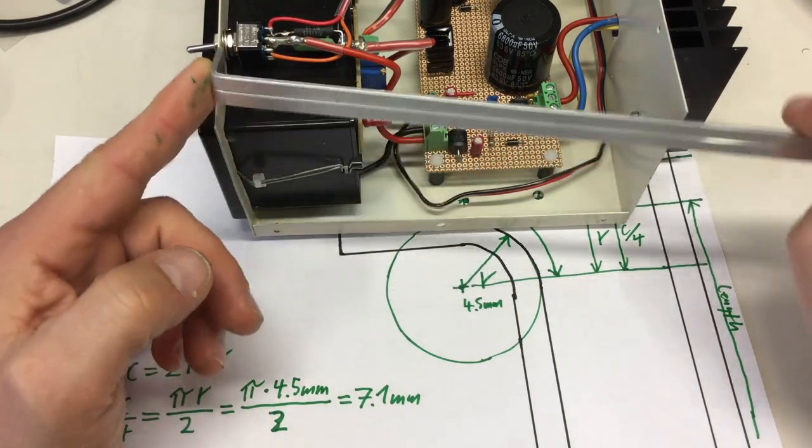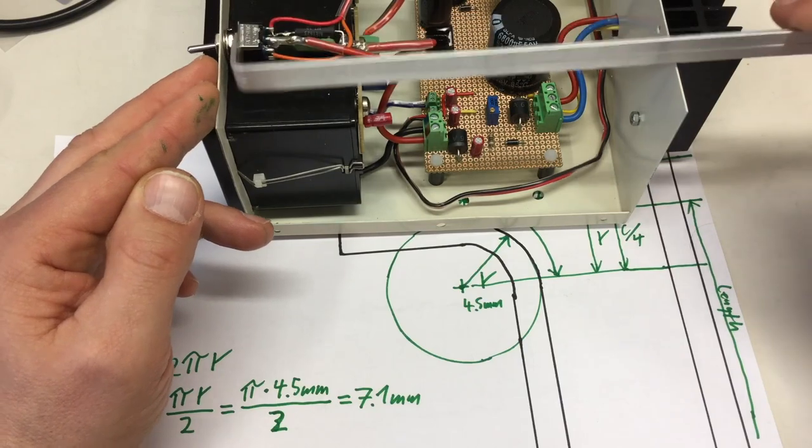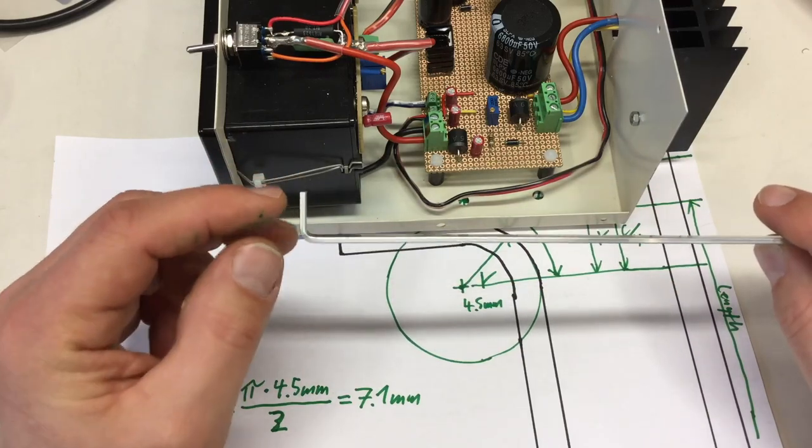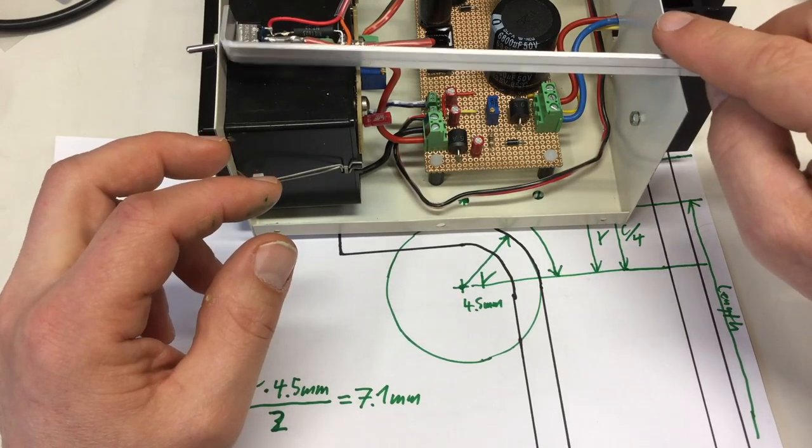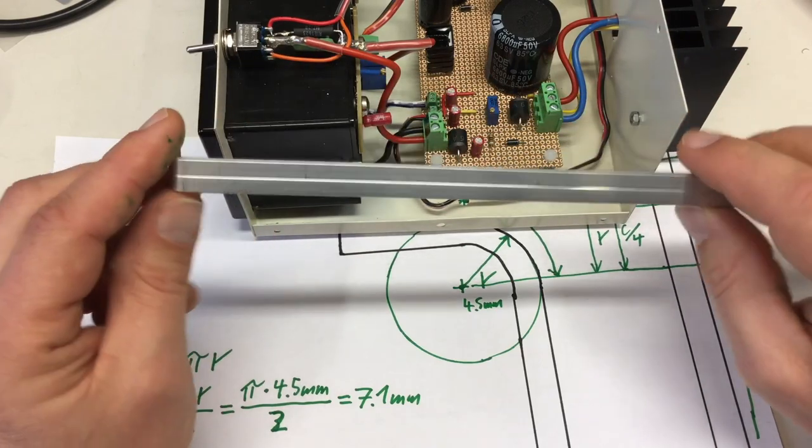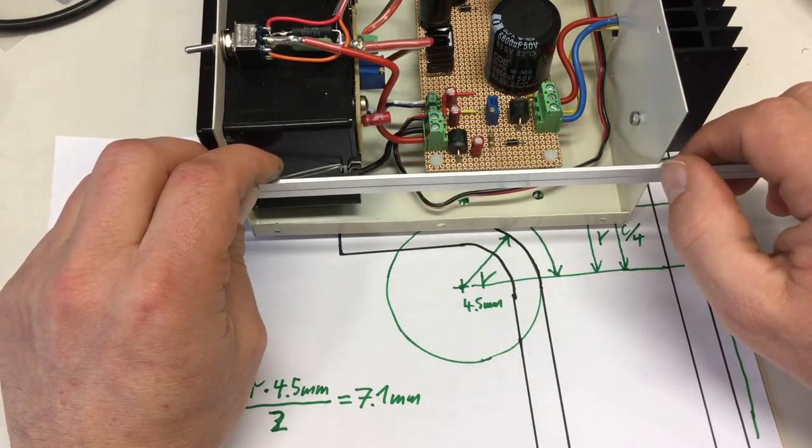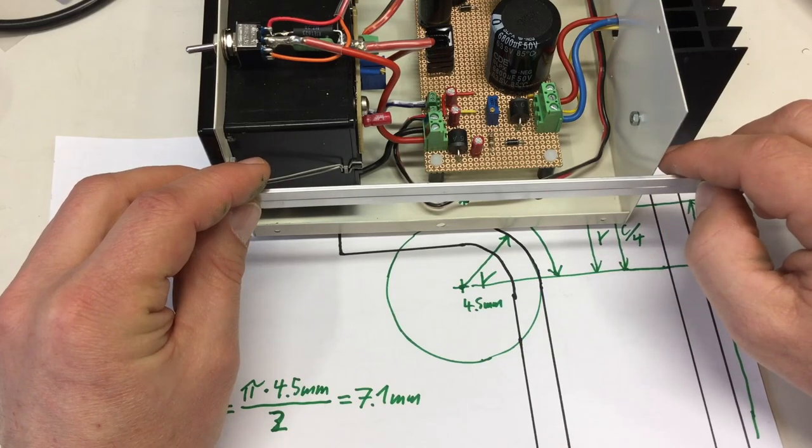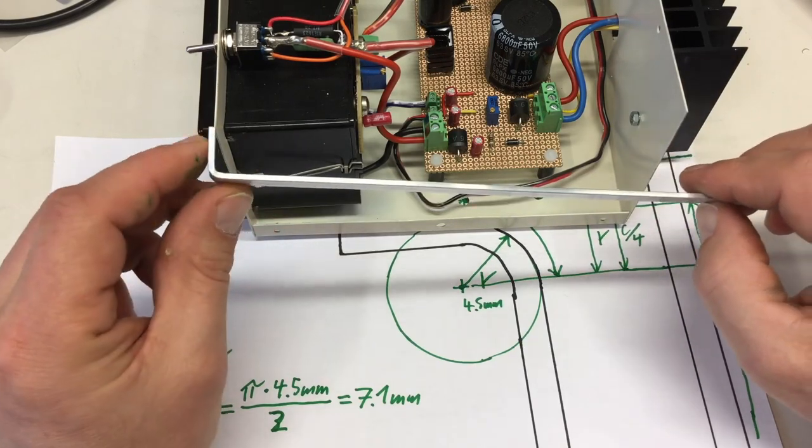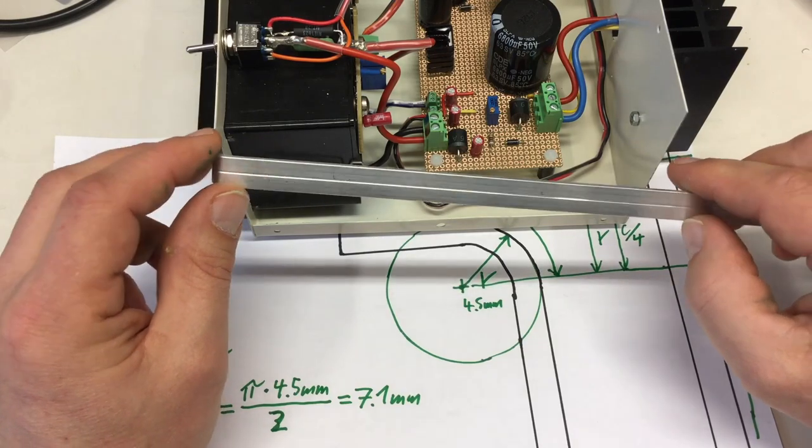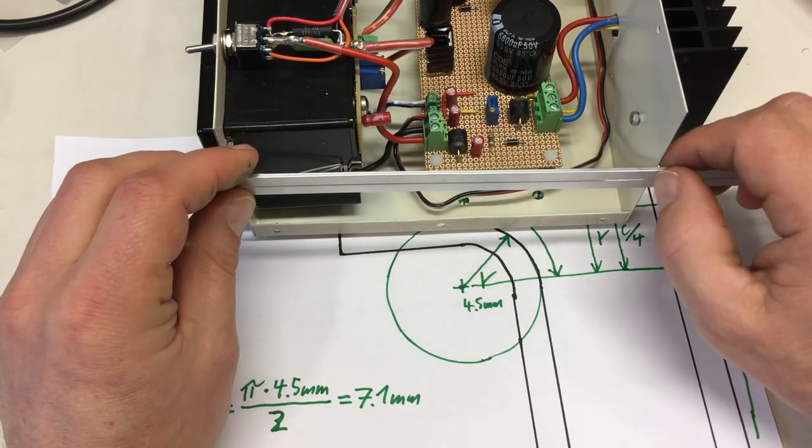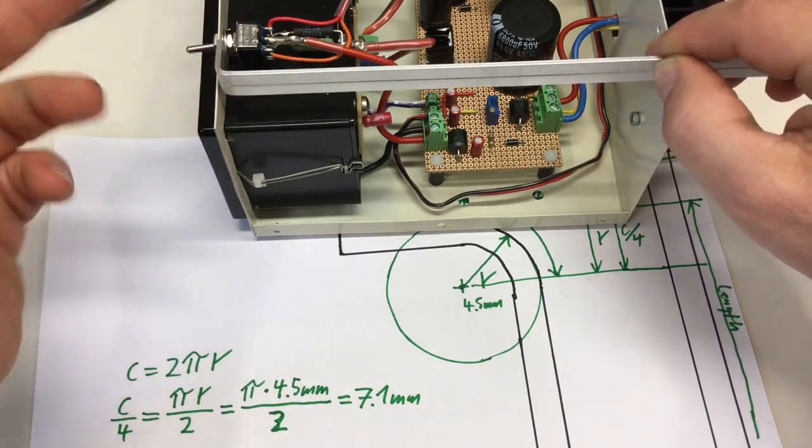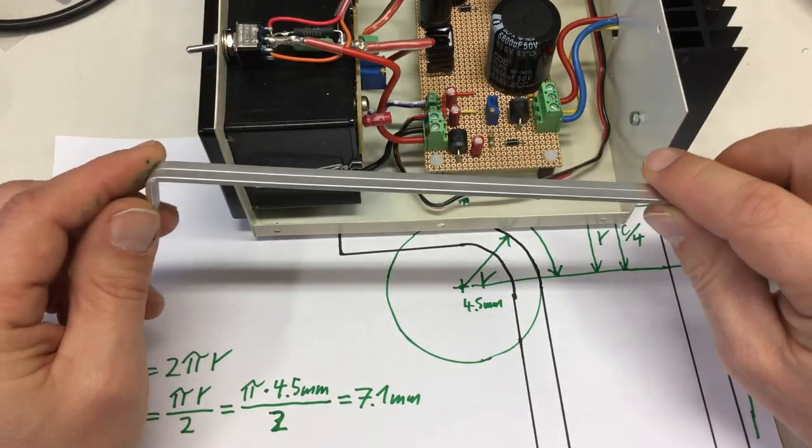So it's time for me to bend the struts that will go from the switches to the back. I already bent one side. And basically I have here 13 millimeters to go completely around the switch. And now the question is where do I cut it and bend it so it will exactly fit in the case.